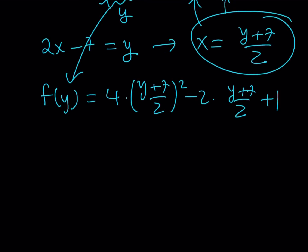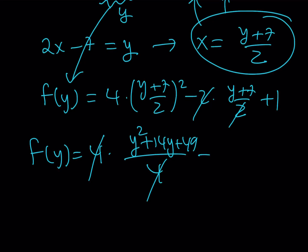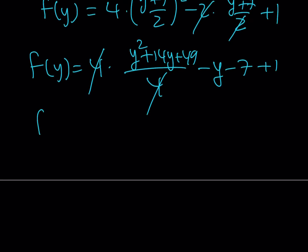Let's go ahead and expand this a little bit. Now, the expression inside the parentheses can be written as y squared plus 14y plus 49 divided by 4. Minus, these two cancels out. And 4 cancels out. Leaving us with minus y minus 7 plus 1. Great. So, let's go ahead and clean it up a little bit. F of y can be now written as y squared plus 14y minus y is obviously 13y. 49 minus 7 is 42 plus 1 is 43.